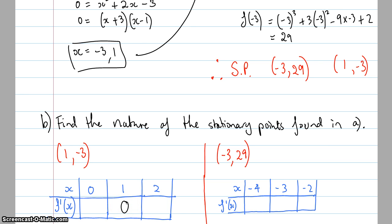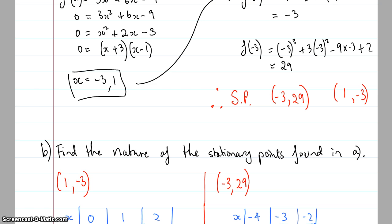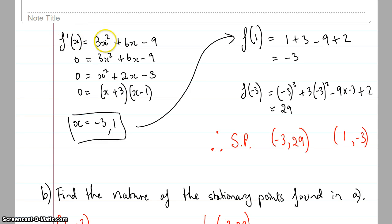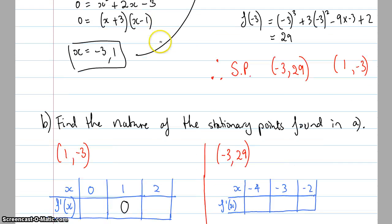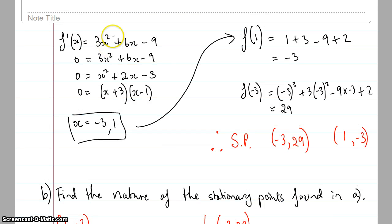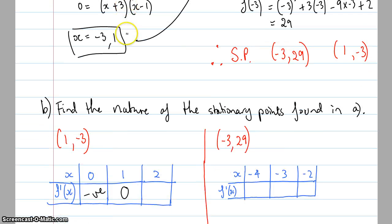I'll look to the left by choosing x = 0, and to the right by choosing x = 2. I could have chosen 0.9 and 1.1, but whole numbers are easier. Substituting x = 0 into the derivative gives negative 9 — I don't care about the exact value, just that it's a negative gradient. Substituting x = 2 gives a positive number — again, I only care that it's positive.